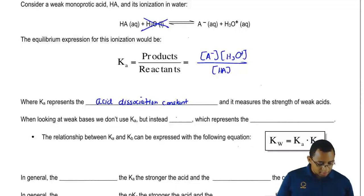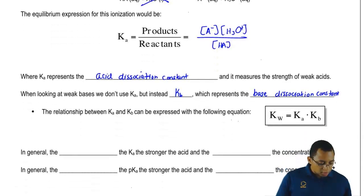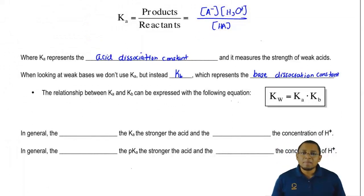Instead, they use Kb. This is our base dissociation constant. What we're going to say here is their relationship to each other, Ka and Kb, can be expressed by this formula: Kw equals Ka times Kb.